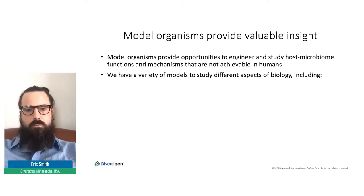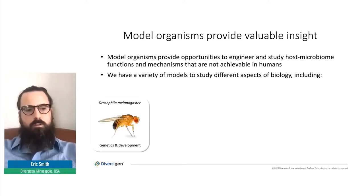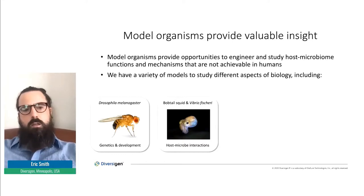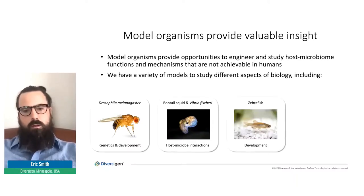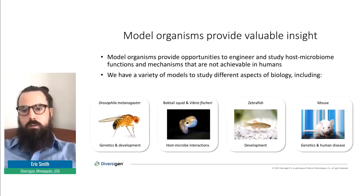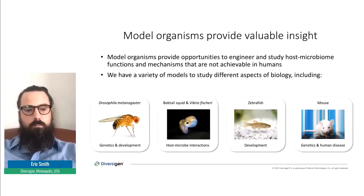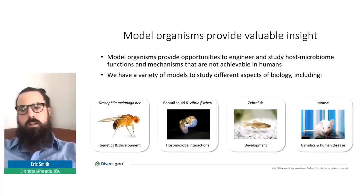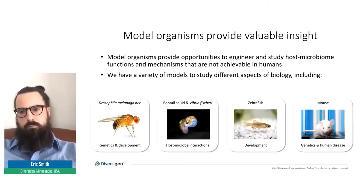We as scientists have developed a variety of model organisms to study different aspects of biology. There's the classical Drosophila melanogaster for studying genetics and development, the bobtail squid and its resident Vibrio fischeri for studying host-microbe interactions, and zebrafish have been very valuable for studying development. And particularly in regards to human health, mouse models have been very invaluable. These organisms have been used to study aspects of biology from basic gene inheritance to how neurons function, how immune systems respond to invading pathogens, and how diseases and cancers develop.